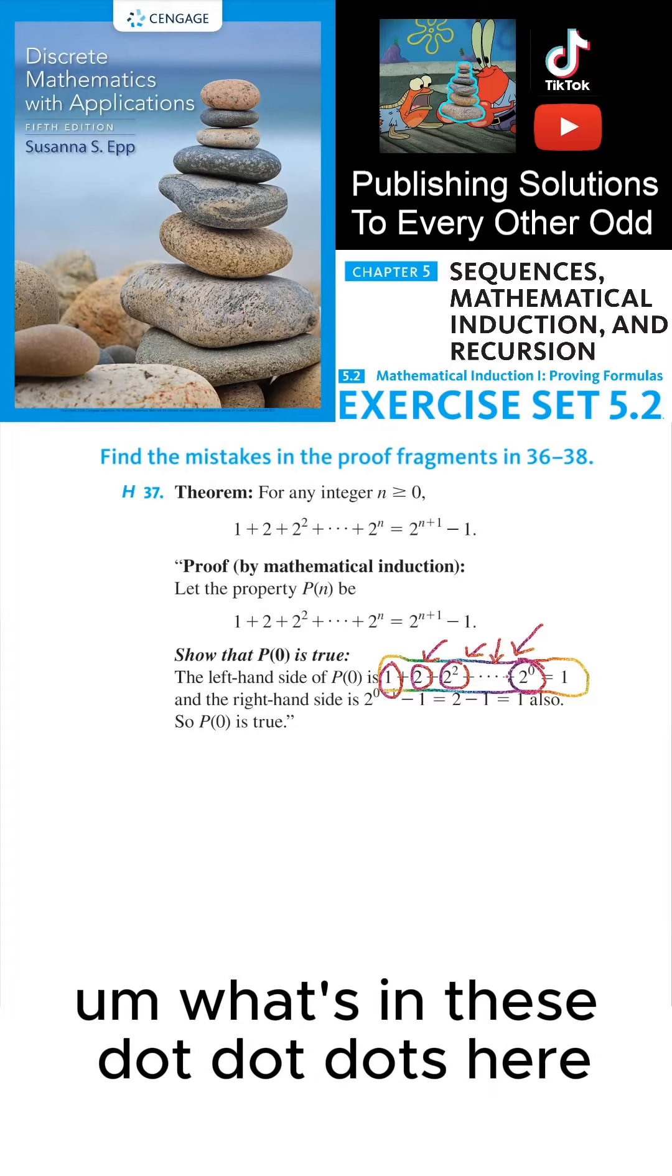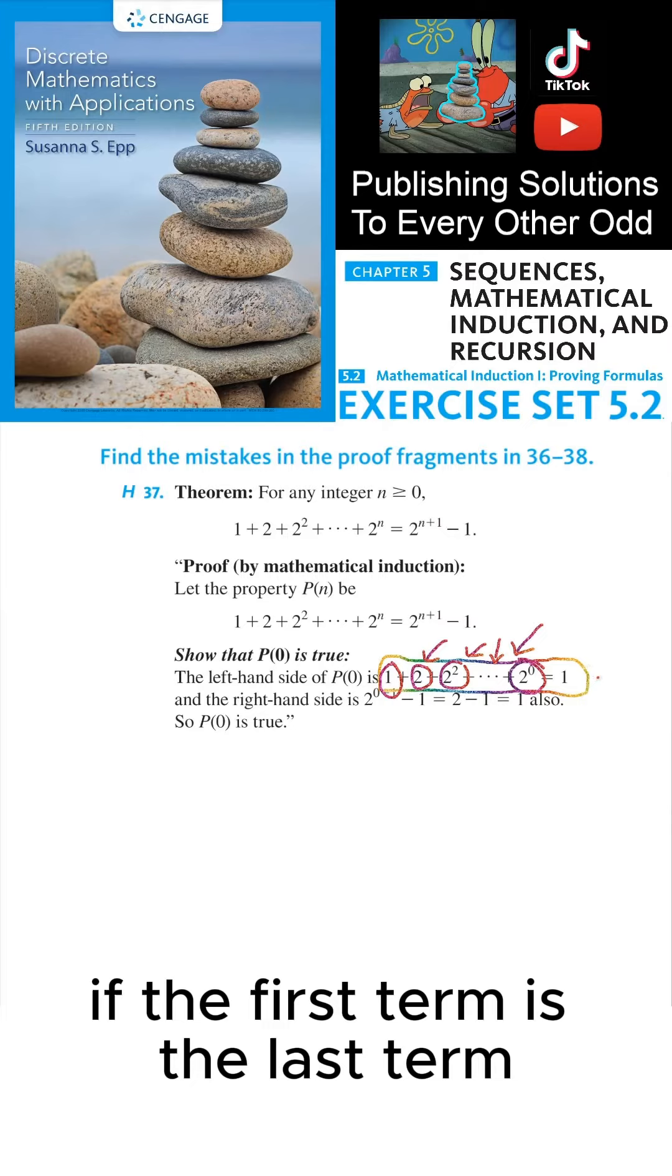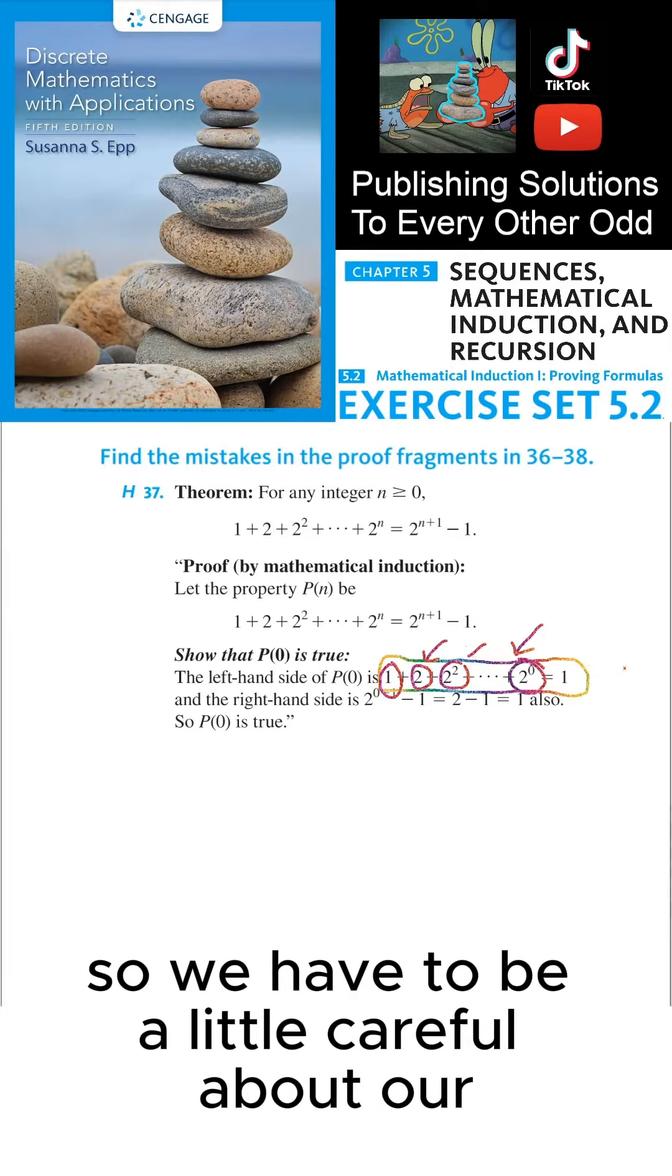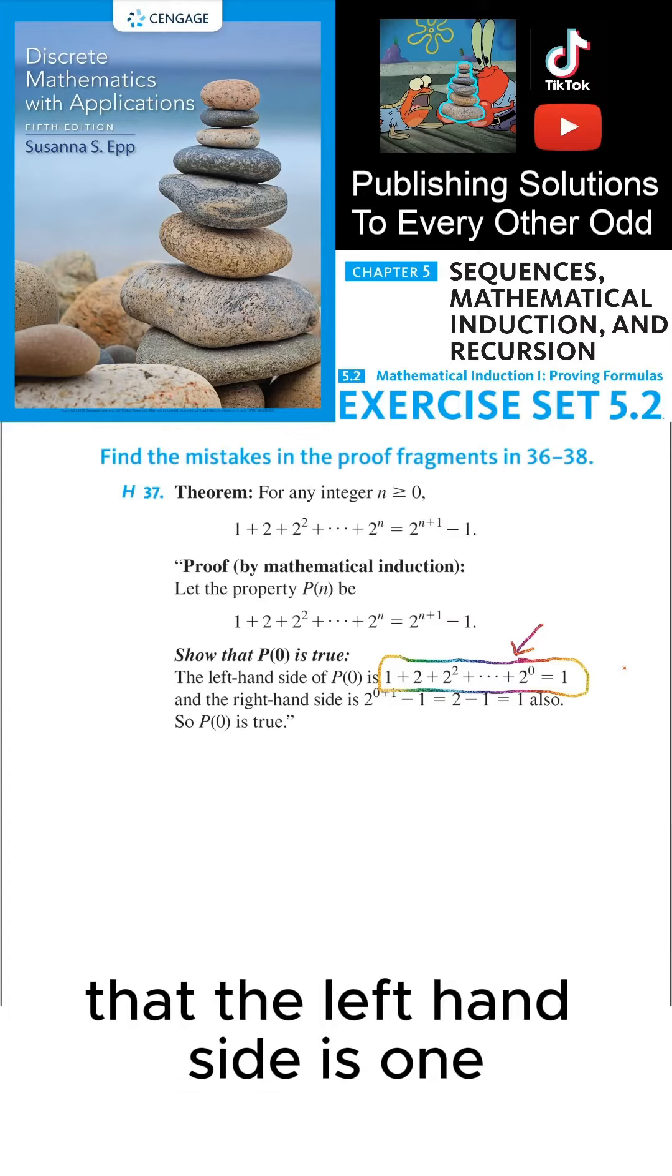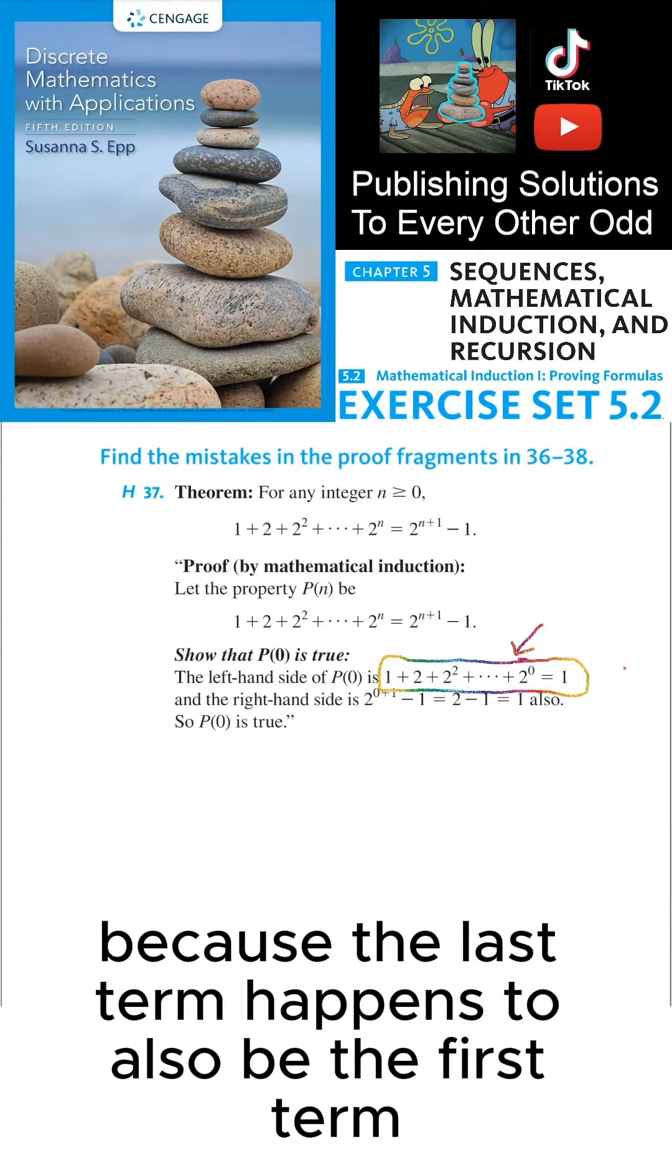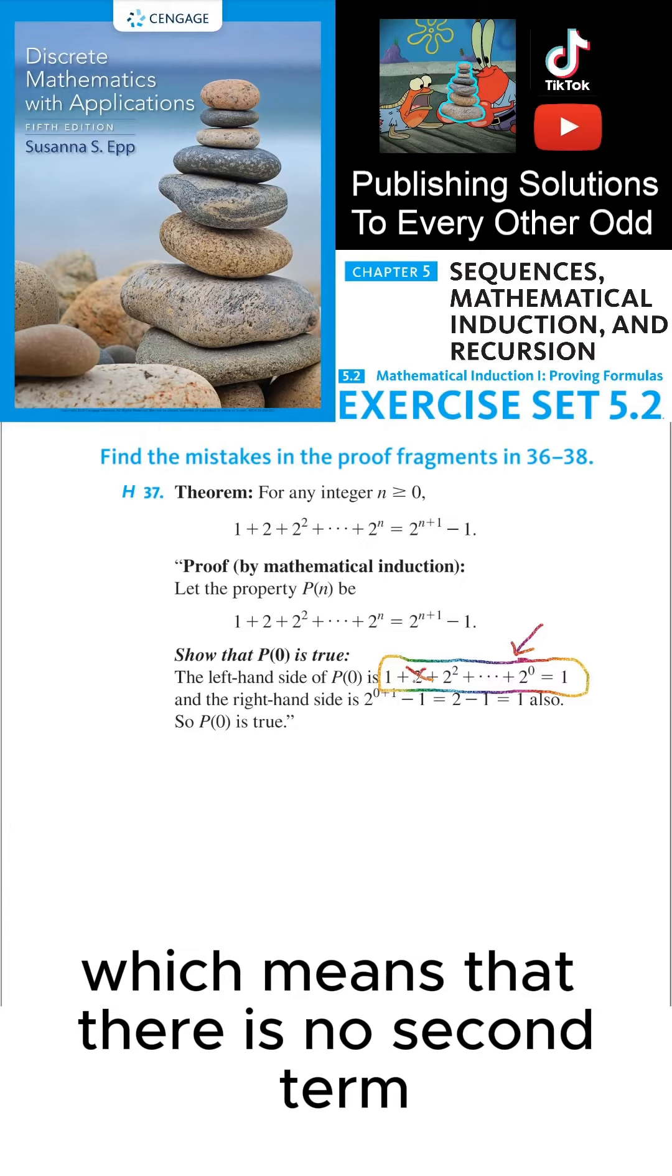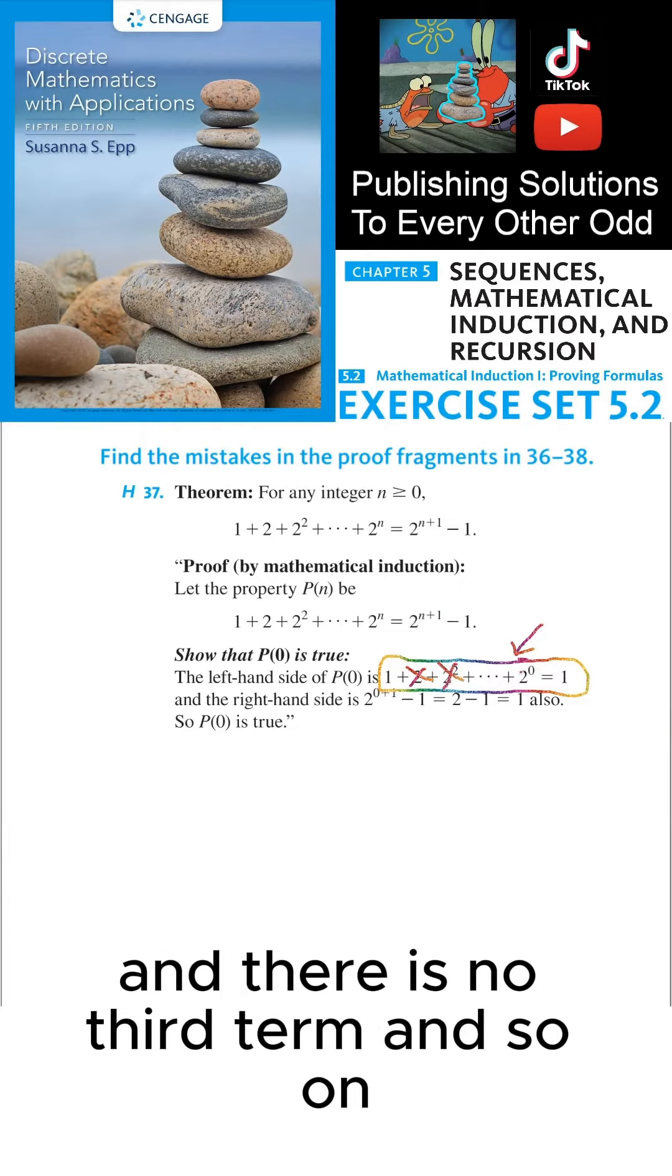What's in these dot-dot-dots here if the first term is the last term? So we have to be a little careful about our notation here. And so it should be clarified that the left-hand side is one because the last term happens to also be the first term, which means that there is no second term and there is no third term and so on.